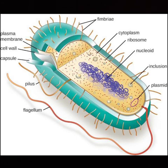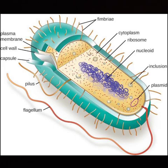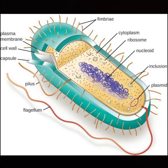The ribosome is the protein factory of the cell. In the case of Prokaryotic cells, the ribosome is of 70S type. In the case of Eukaryotic cells, the ribosome is of 80S type, made of 60S and 40S subunits.